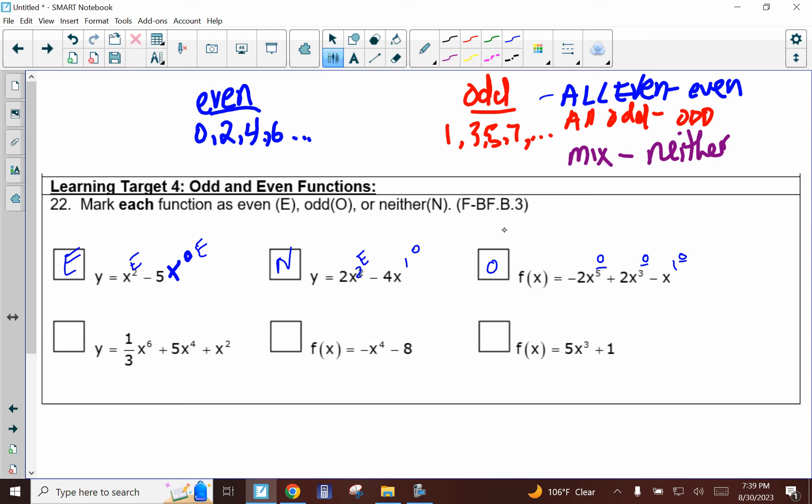If you look at the next one down here, this one is a 6, so that's even. This one is a 4, that's even. And this one is a 2, and that's even. So this is going to be even since they're all even.